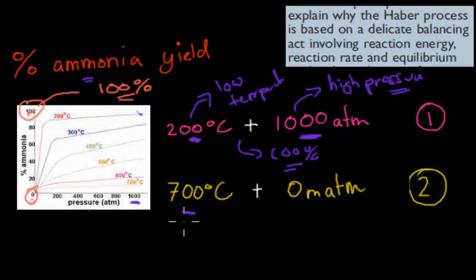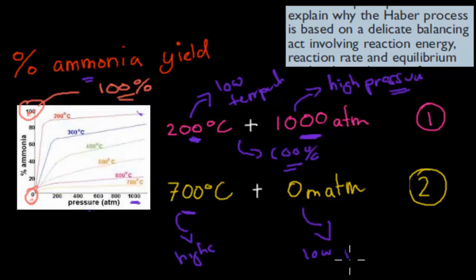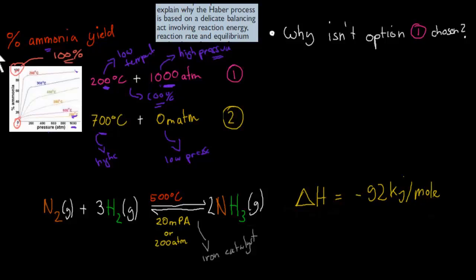On the flip side, 700 degrees Celsius and 0 atmospheric pressure gives the lowest yield — 10% or less, which is very low. The question is why isn't the high-yield option chosen? The actual conditions used are roughly 400 to 550 degrees Celsius — a medium sort of temperature range.